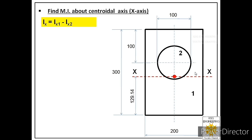Our equation will be IX = IX1 minus IX2, where IX is the moment of inertia of the composite area about the centroidal axis. IX1 is the moment of inertia of area 1 (the rectangular area) about the centroidal axis, and IX2 is the moment of inertia of area 2 (the circle) about the same centroidal axis. To get IX, we first find IX1.